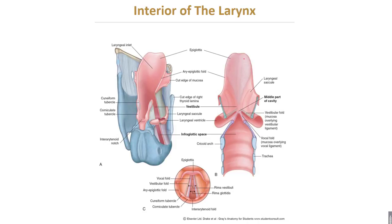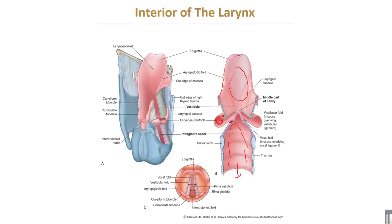This is the interior of the larynx. Here is the epiglottis at the entrance, the aryepiglottic folds, the vestibule, and the sinus of the larynx. These are the vestibular folds and the vocal folds of the vocal cords. This is the lower part of the larynx, which continues downwards with the trachea.